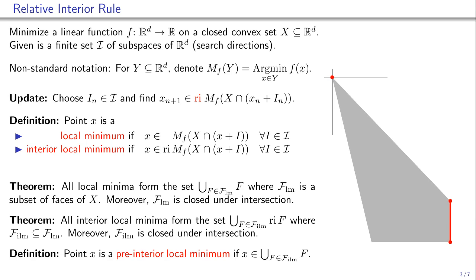The top corner of the polygon is a bad interior local minimum, where at this point we cannot move at all.